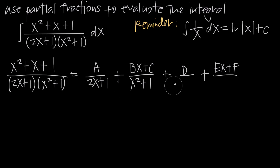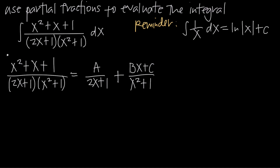Then we add to that a term to set up a decomposition with linear and quadratic factors. So now that we have this decomposition, we need to simplify it. What we'll do is multiply both sides of this equation by the denominator from the left-hand side.